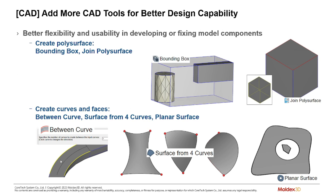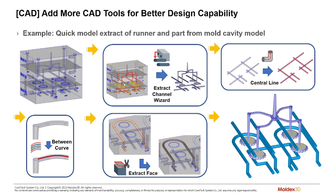The 'create curves between curves' function lets you take two curves and create a number of curves between them — mostly useful for creating a centerline across a face, which is helpful for runner systems. 'Surface from four curves' is a 2D function previously not available in MoldX3D. 'Planar surface' allows you to create a surface from a series of curves that are in the same plane, which is very important for creating solid objects in MoldX3D.